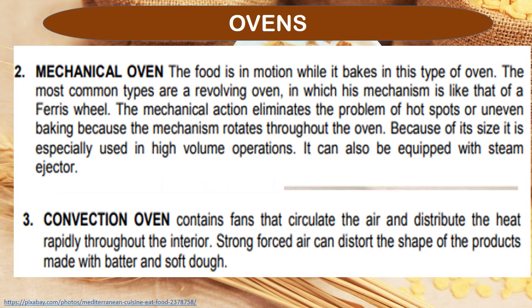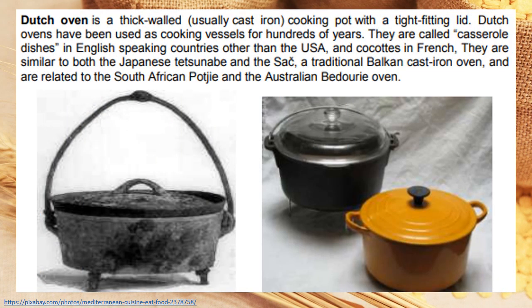The convection oven contains fans that circulate the air and distribute heat rapidly throughout the interior. Strong forced air can distort the shape of products made with batter and soft dough. The Dutch oven is a thick-walled, usually cast-iron cooking pot with a tight-fitting lid. Dutch ovens have been used as cooking vessels for hundreds of years. They are called casserole dishes in English-speaking countries other than the USA, and cocots in French.